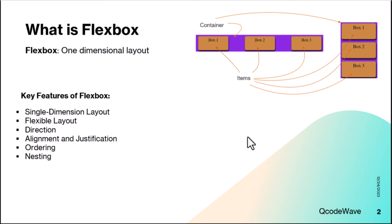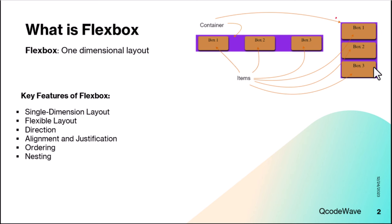Flexbox automatically adjusts the size of items to fill available space or shrinks them to prevent overflow. Unlike traditional layouts where block is vertically based and inline is horizontally based, flexbox can lay out items in any direction. Alignment and justification of content is easy both horizontally and vertically, and you can change the visual order of elements without changing the HTML.